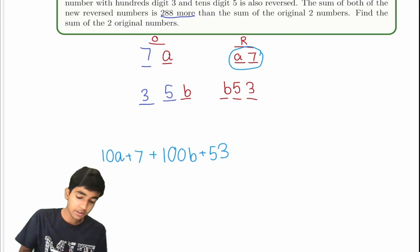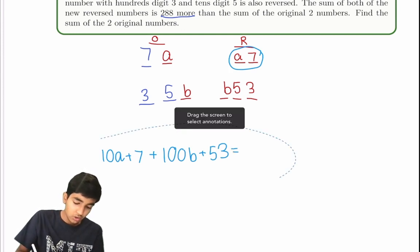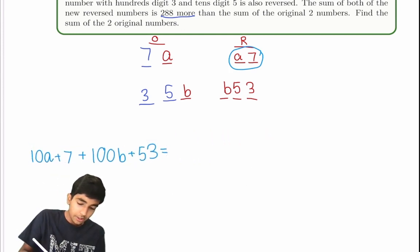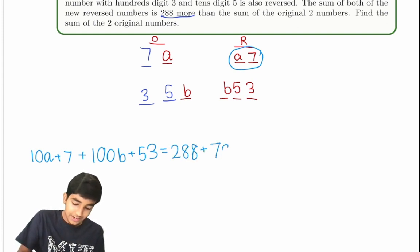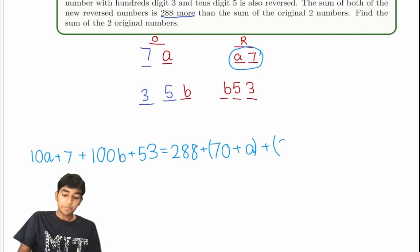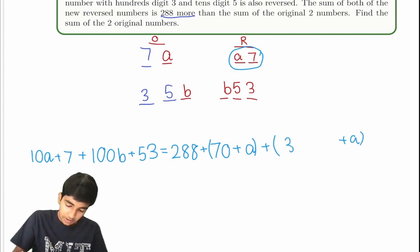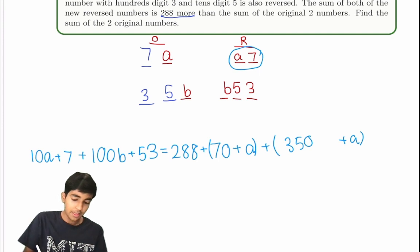So these are the reverse number sums. And if we're given that it's going to be 288 more than the sum of the original two numbers — which is 7A, expressed as 70 plus A, plus the three-digit number, which is 300 plus 50 plus A, or just 350 plus A — now let's simplify this.